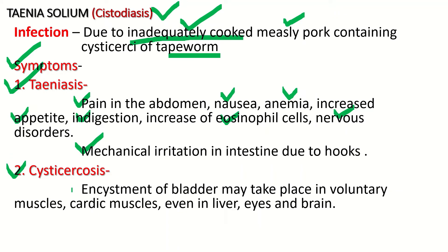Cysticercosis is more dangerous than Taeniasis because the bladder worm may be embedded in the host's voluntary muscles like cardiac muscles, or also in delicate organs like the liver, eyes, and brain. Removing all types of bladder worms from these delicate tissues is very difficult.